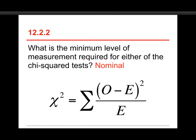You can tell that because right here, this is the actual formula for chi-squared. The O and the E stand for observed frequencies and expected frequencies. In order to get a frequency, how common the score is, you can get that with any of the four levels, including nominal.